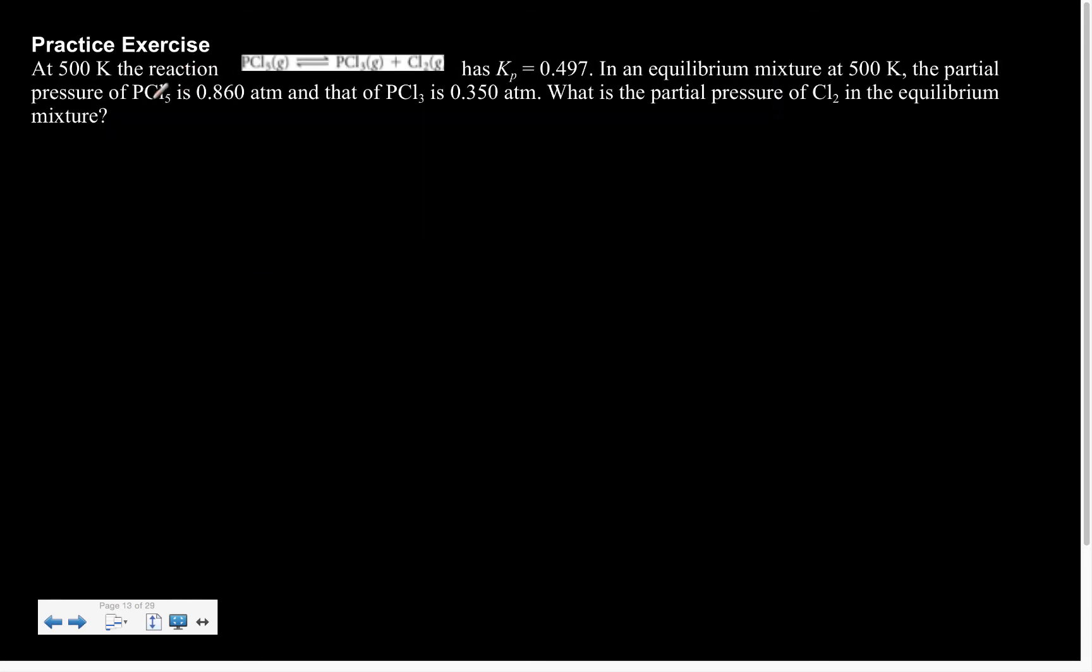All right, next up. Here it says that at 500 degrees, the reaction has a Kp of 0.497. In an equilibrium mixture, the partial pressures of PCl5 and PCl3 are given. What is the partial pressure of Cl2? So what are we really doing here? We already have our K value. We have two of my pieces of information. We're solving for X.